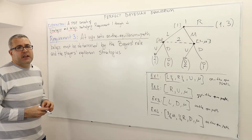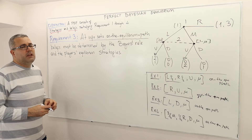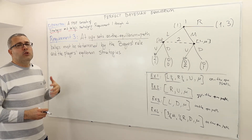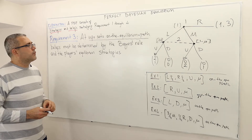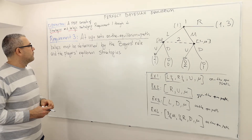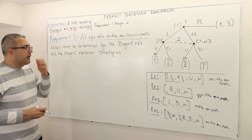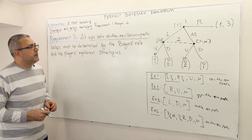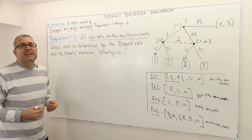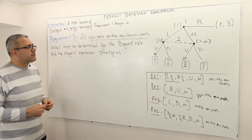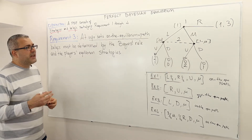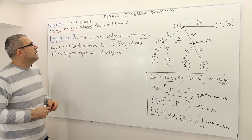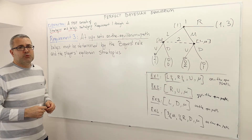Requirement three says your beliefs at information sets cannot be random, especially if they are on the equilibrium path for some strategy profile. They should be consistent with the player's strategies — previous player's strategies — according to Bayes' rule.